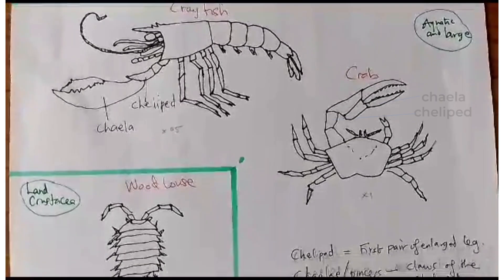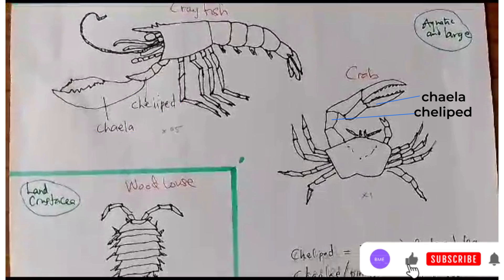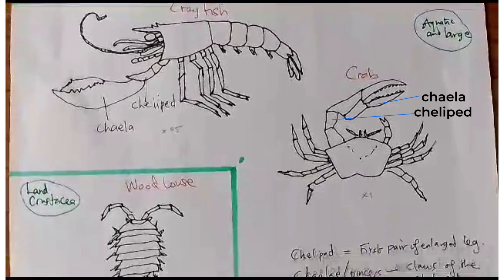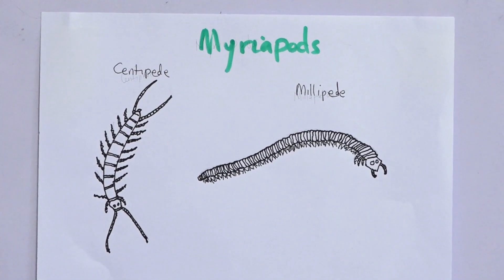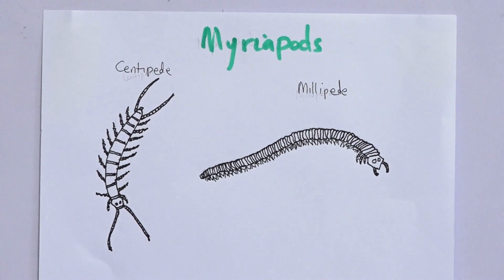Now the crustacean special feature is the cheliped and chela. Crustaceans have five pairs of walking legs, and the first pair is enlarged to form what is called the cheliped. At the end of the cheliped are claws, and those claws are called the chela. That is the cheliped and chela in crustaceans.